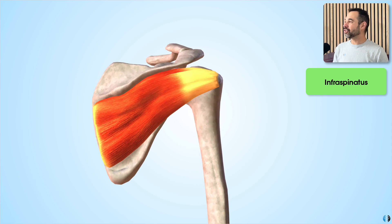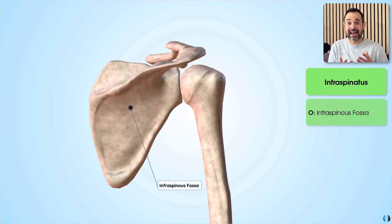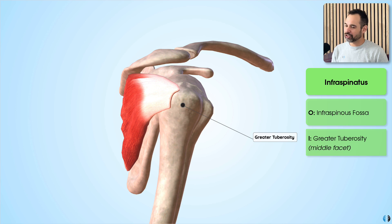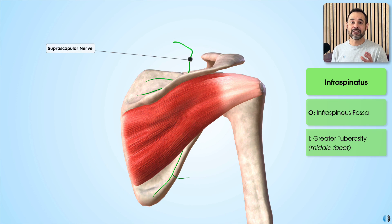Next we have the infraspinatus muscle. This muscle originates at the infraspinous fossa — the fossa inferior to the spine of the scapula — which is naturally how we know this muscle is named infraspinatus. It also inserts into the greater tuberosity of the humerus, more specifically the middle facet. Much like the supraspinatus, this muscle also takes its nerve supply from the suprascapular nerve.